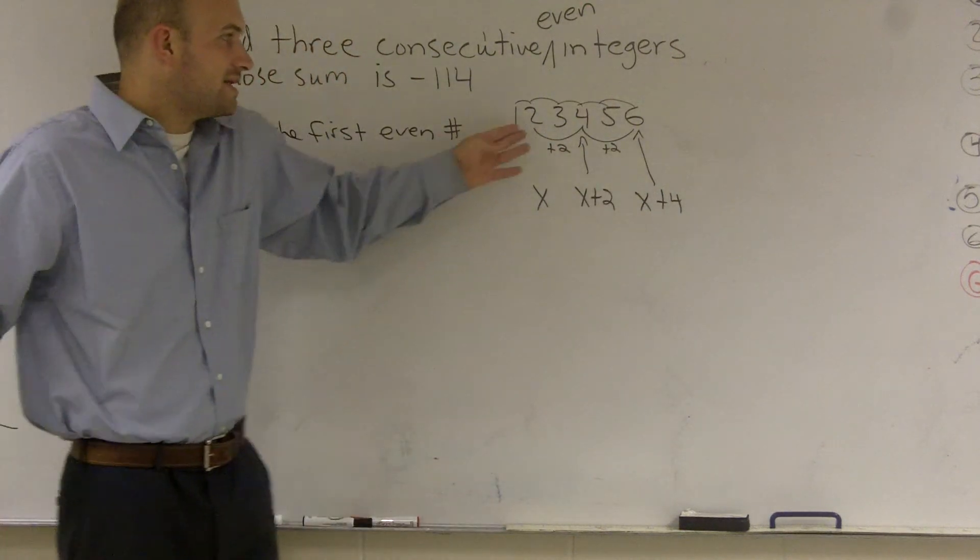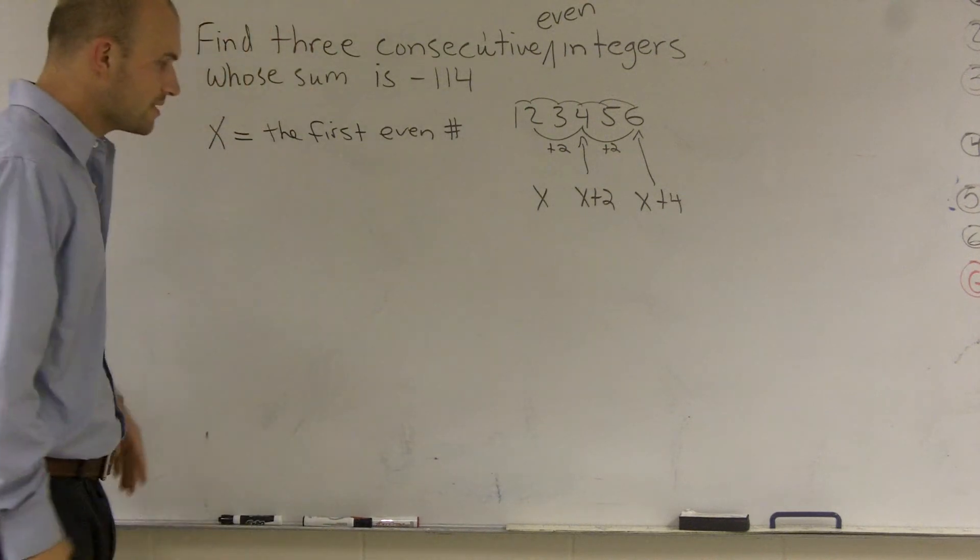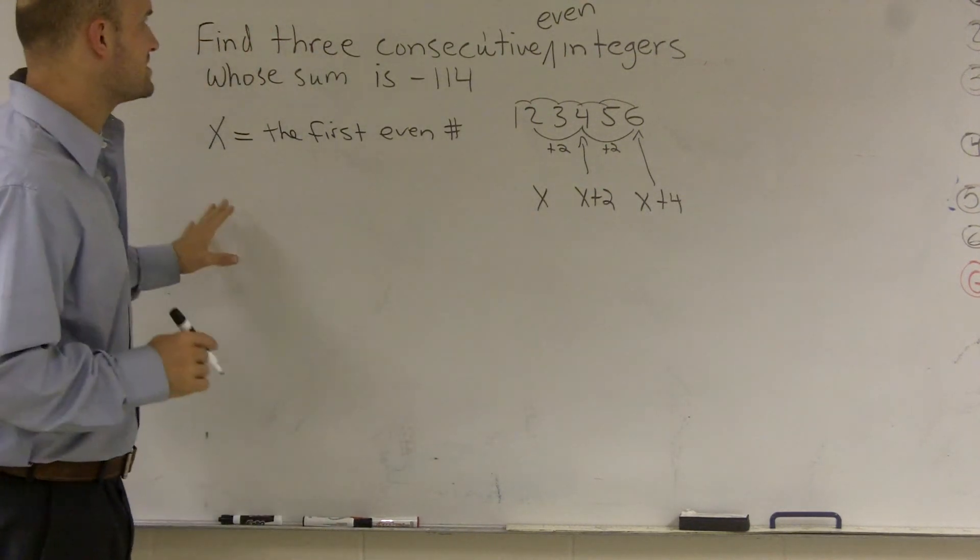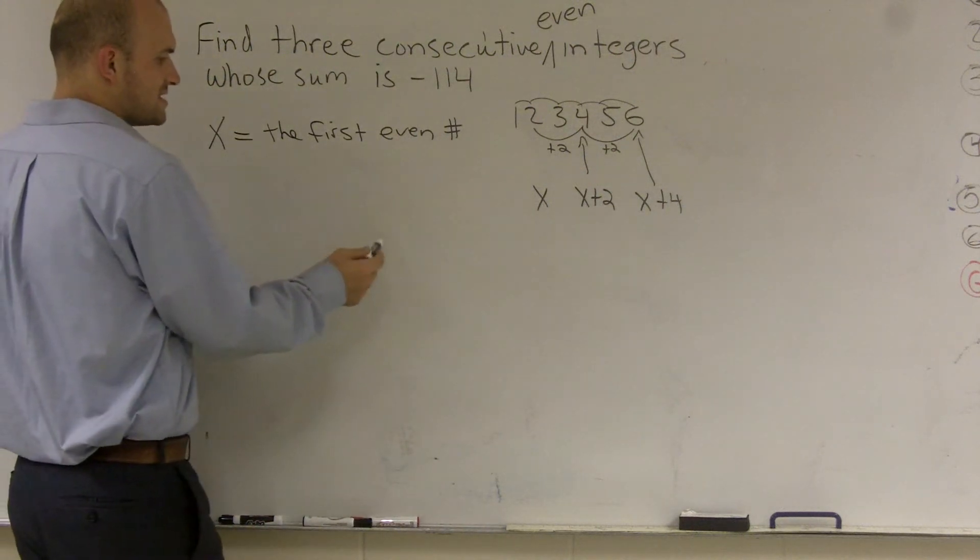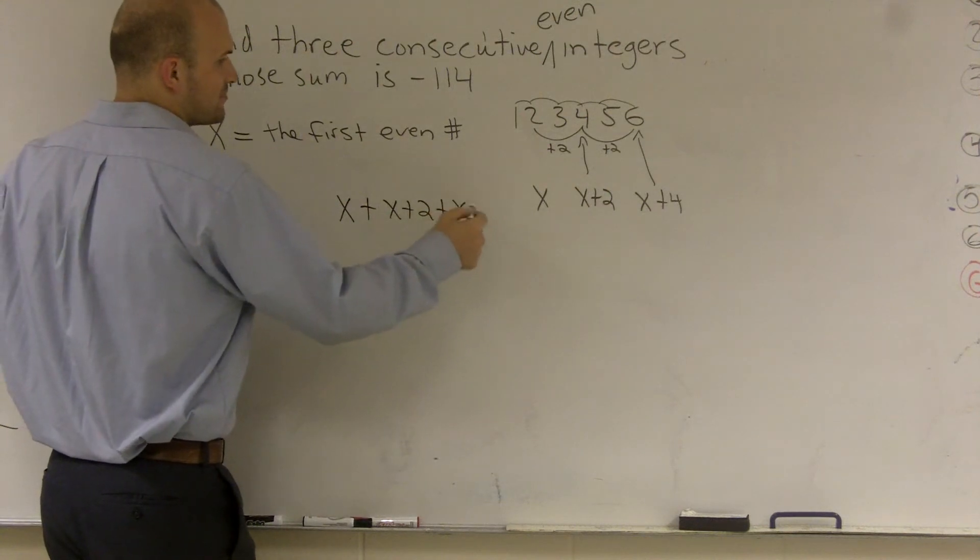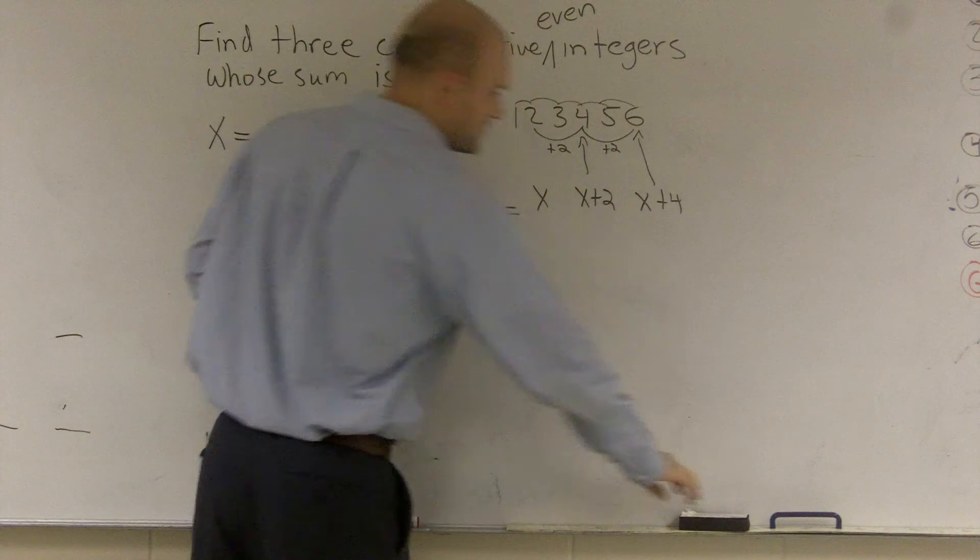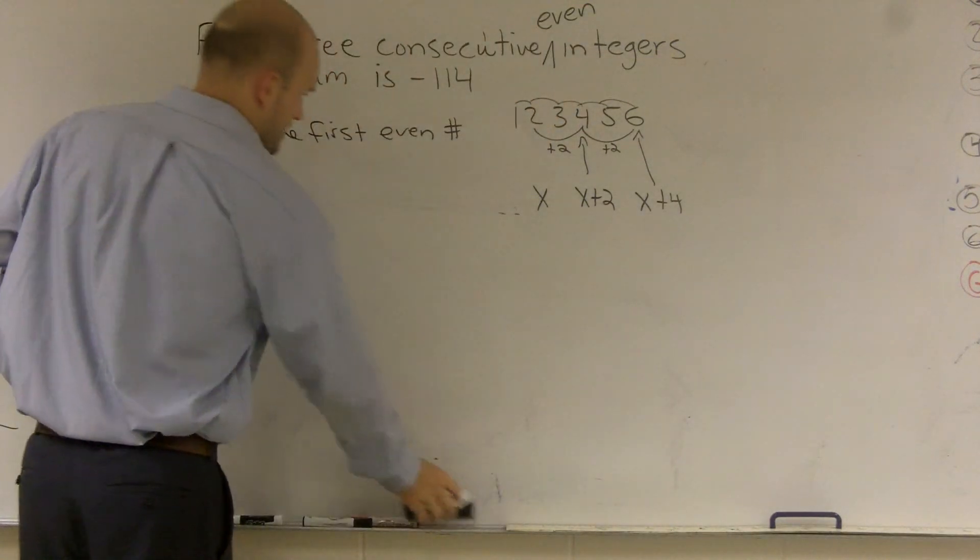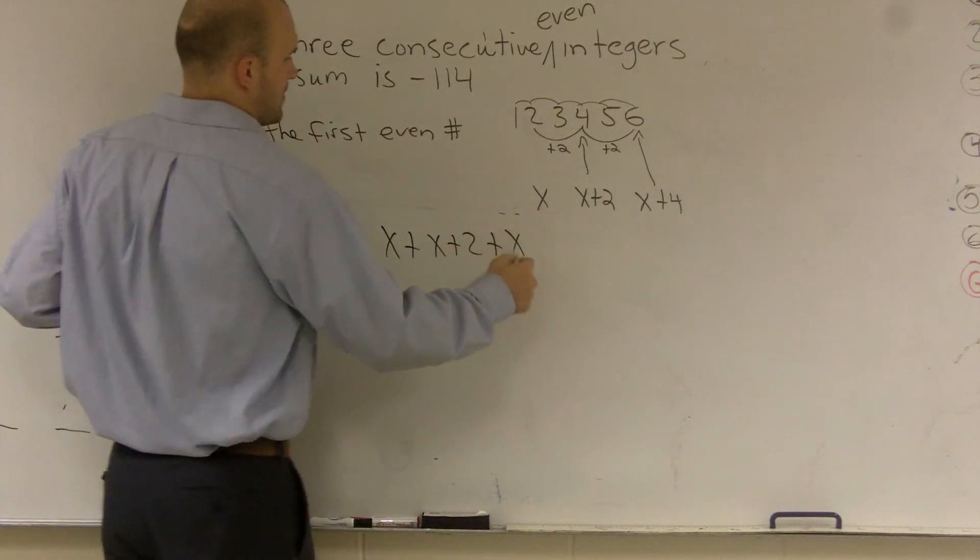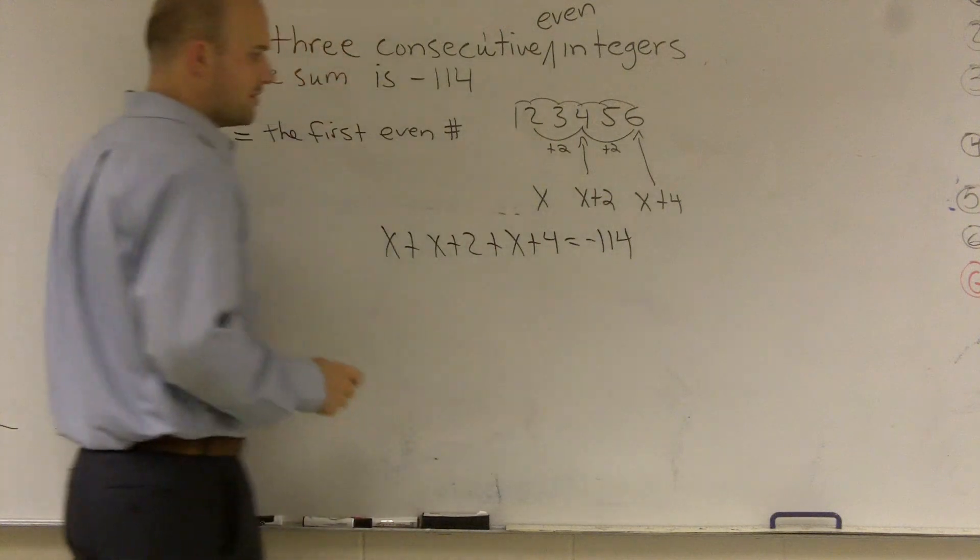Now, in here, in this example, my first number was 2. But I don't know what my number is. I don't know what my first number is. That's why we gave it x. Now it says the sum of them, so sum is going to tell me addition. So I can write x plus x plus 2 plus x plus 4 equals, now I ran out of room, equals negative 114.